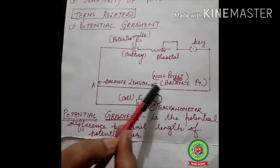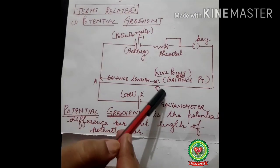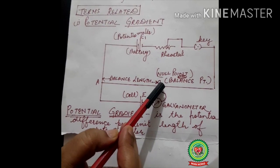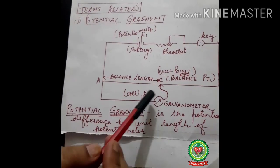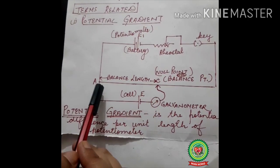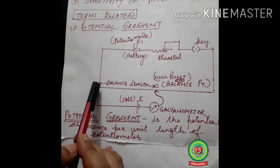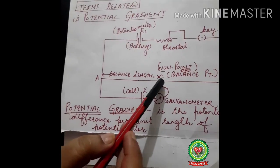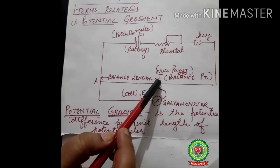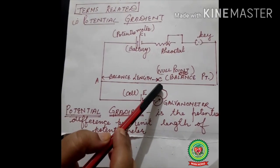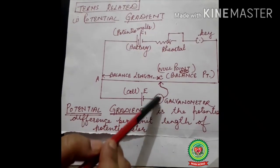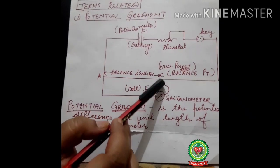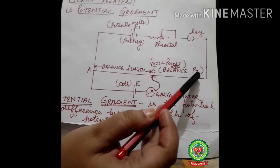Here we have a jockey. A jockey is an instrument which we drag along this wire so that we get a null point. When we start the experiment, we drag the jockey on this wire and a point will come where there is still no deflection in the galvanometer, meaning no current is being passed.